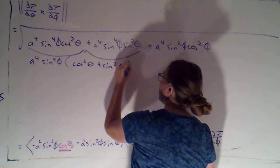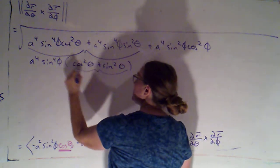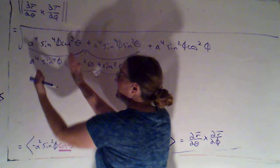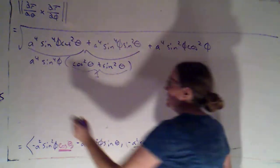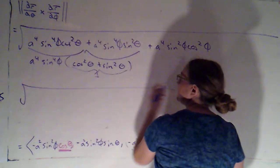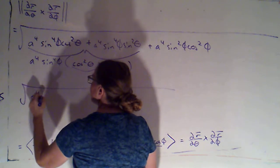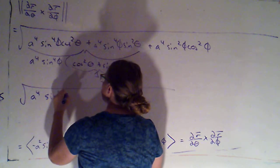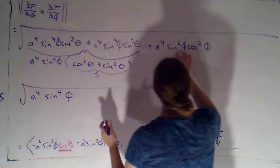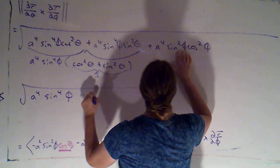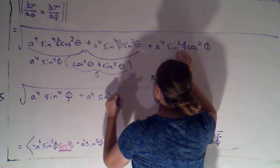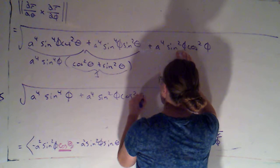So these two terms collapse down to the square root of a to the fourth times sine to the fourth phi, and then this is plus a to the fourth sine squared phi cosine squared phi.